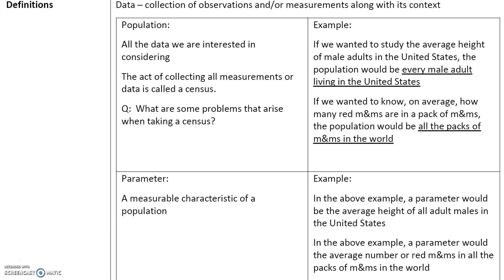Here are some definitions. Data are a collection of observations and/or measurements along with its context. Population is all the data that we're interested in considering. For example, if we want to study the average height of male adults in the United States, the population would be every single male adult living in the United States. The act of collecting all measurements or data is called a census.